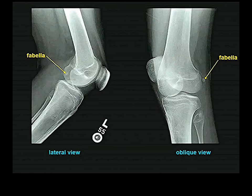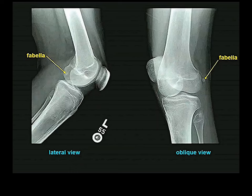Within the tendinous origin of the lateral head of the gastrocnemius, there can form a sesamoid bone called the fabella. It is completely normal. If you're going to be a radiologist, you need to know it can exist and not interpret it as pathology.